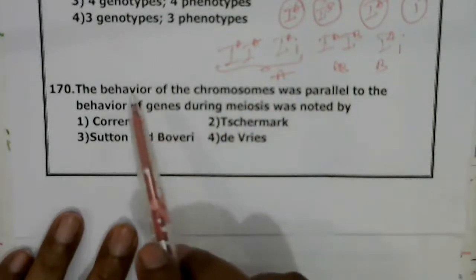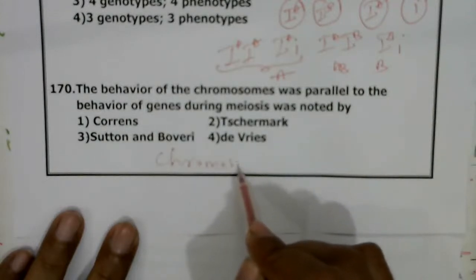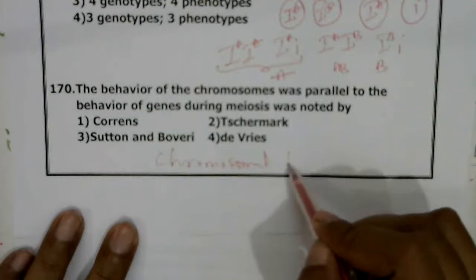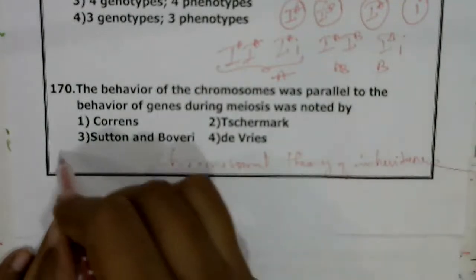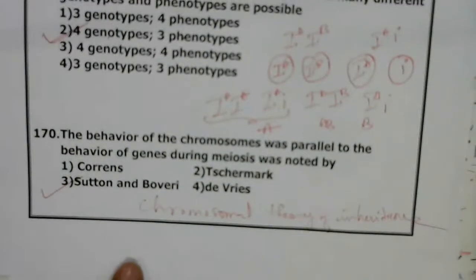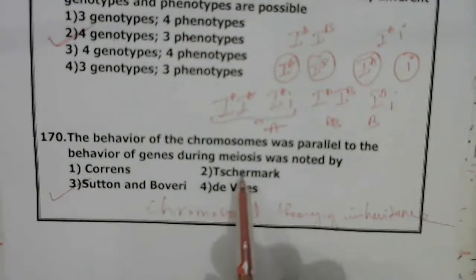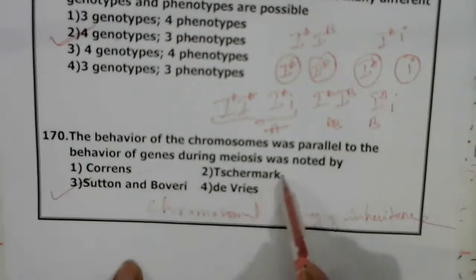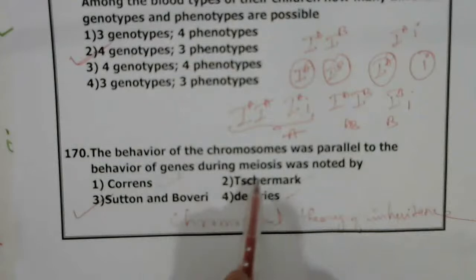The behavior of chromosomes is parallel to the behavior of genes — this was explained in the chromosomal theory of inheritance by Sutton and Boveri. Correns, de Vries, and Tschermak are the three scientists who rediscovered the work of Mendel. Mendel's work was not recognized even after his death, but it came into value after its rediscovery by these three scientists.